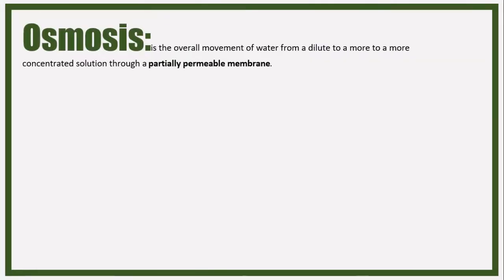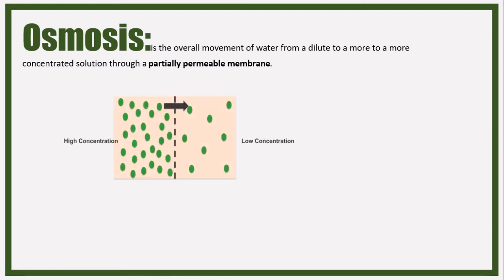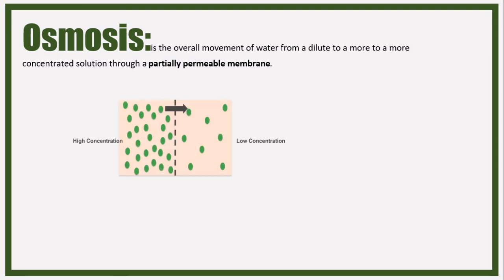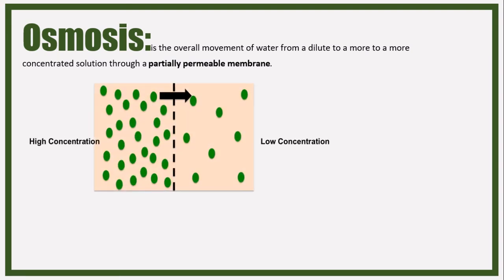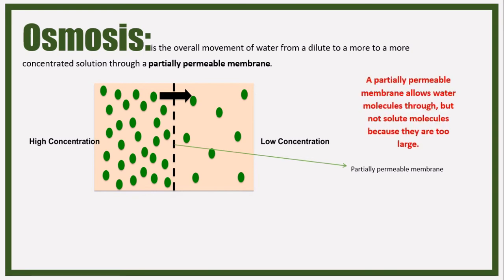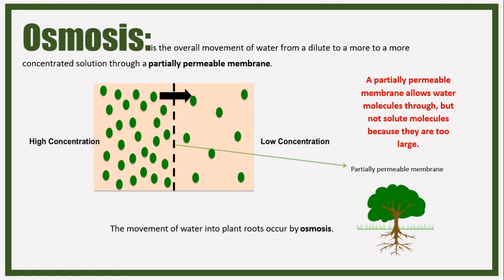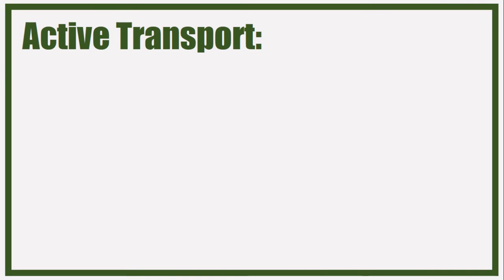Moving on to osmosis. Osmosis is basically the same as diffusion but in water, and it involves a partially permeable membrane. Only water molecules can pass through that partially permeable membrane - it allows water molecules through but not solute molecules, because solute molecules are too large. The movement of water into plant roots occurs by osmosis.